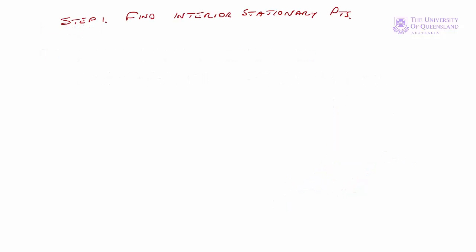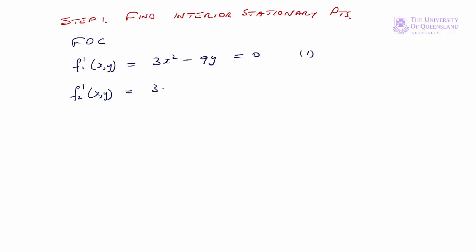Our first step is to find the interior stationary points by applying the first order conditions — finding the first derivatives and setting them equal to 0. The first partial derivative f₁' of x and y equals 3x² minus 9y; set that equal to 0 (equation 1). The other first order partial is f₂' equals 3y² minus 9x; set that equal to 0 (equation 2). From equation 2, x equals one-third y², which we substitute into equation 1.